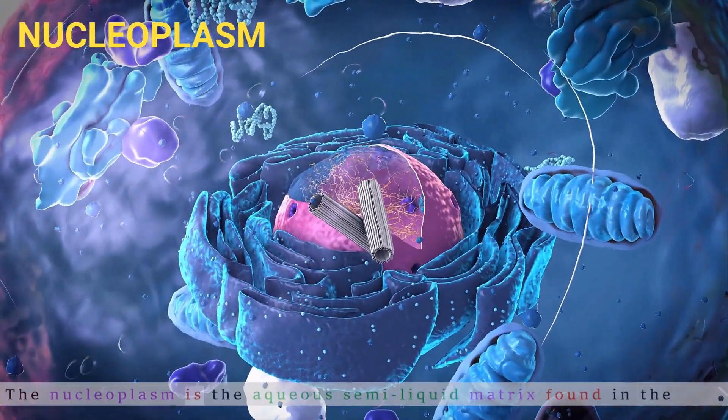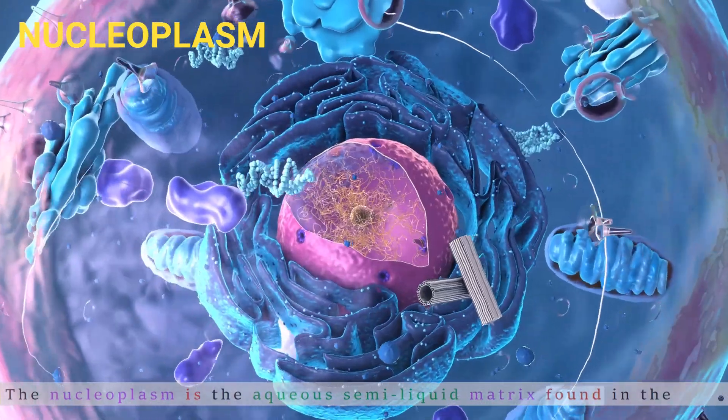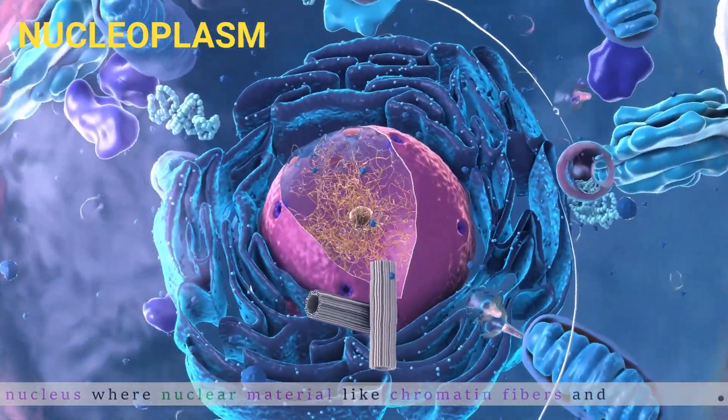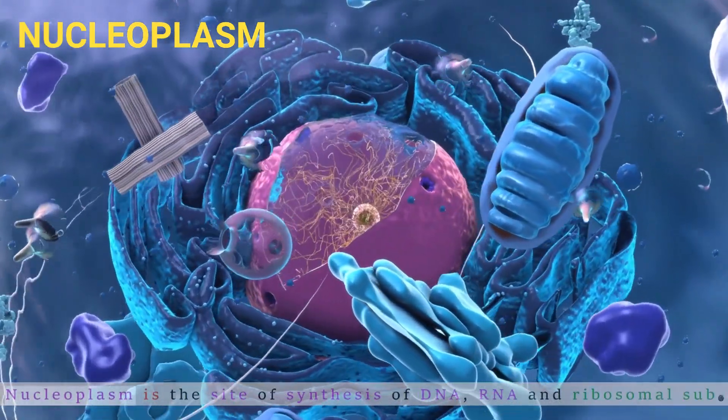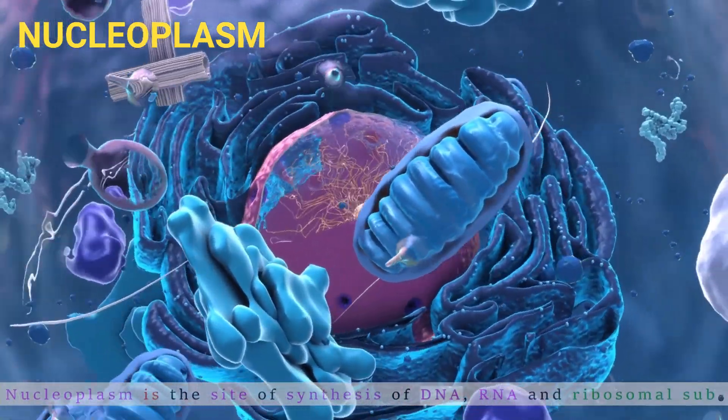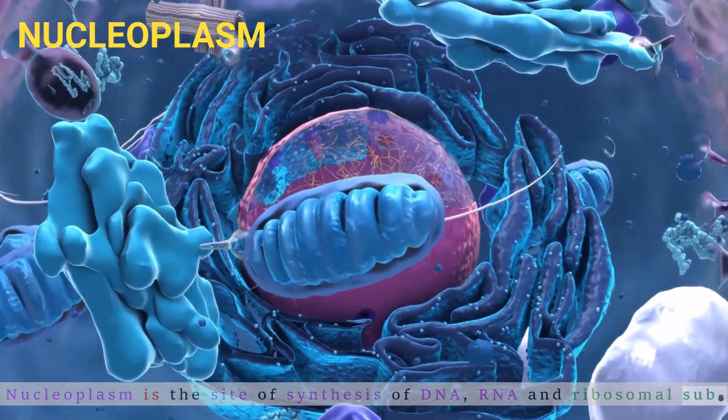The nucleoplasm is the aqueous, semi-liquid matrix found in the nucleus where nuclear material like chromatin fibers and chromosomes are present. Nucleoplasm is the site of synthesis of DNA, RNA, and ribosomal subunits.